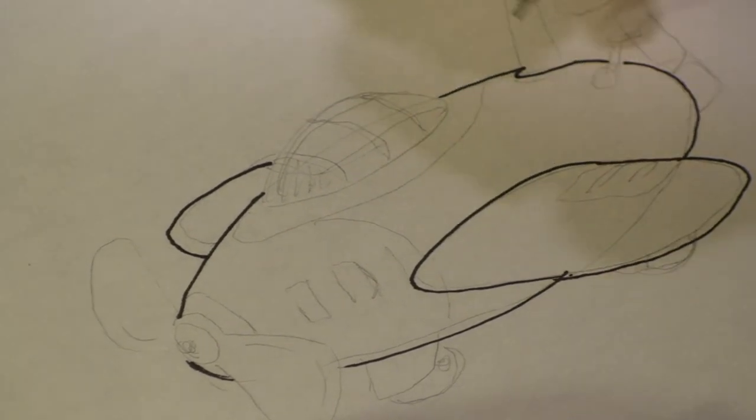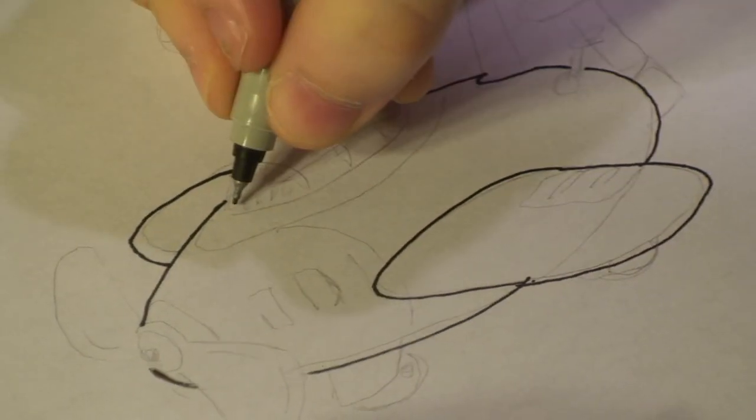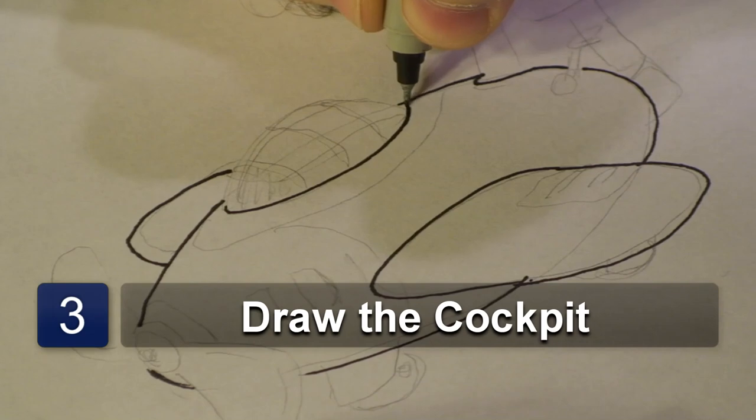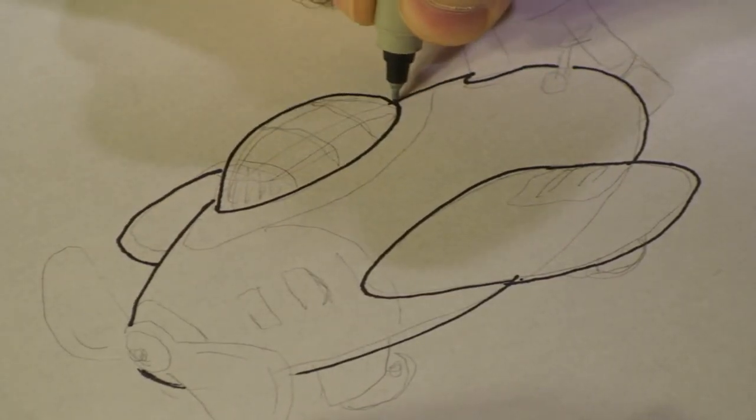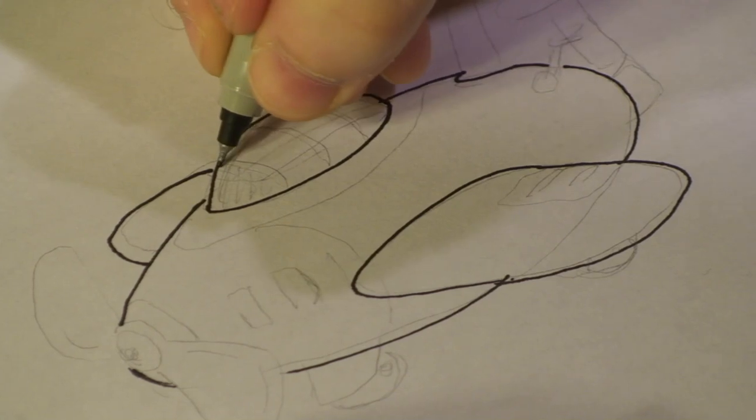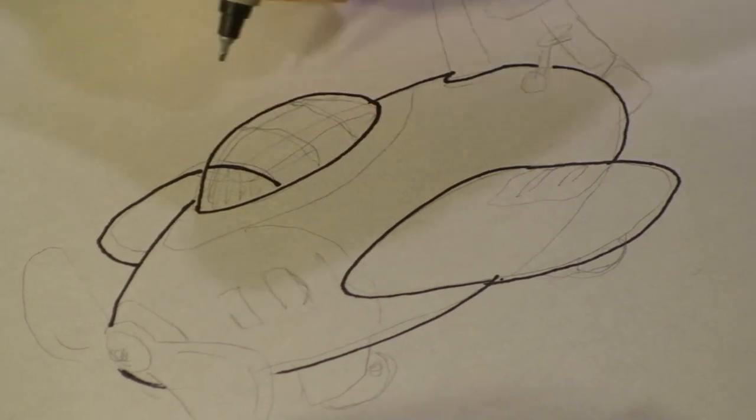And finally draw a semicircle up here, and then have a bubble pop out of it because that's going to be our toy cockpit. So, add that right there.